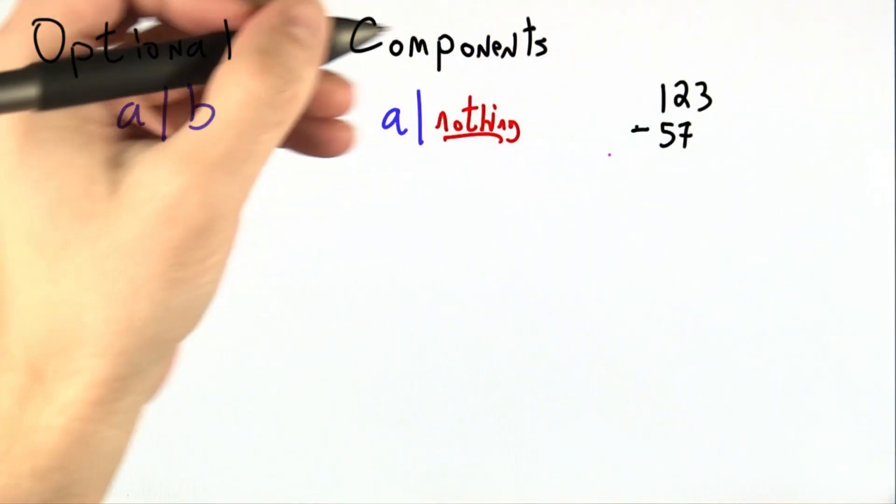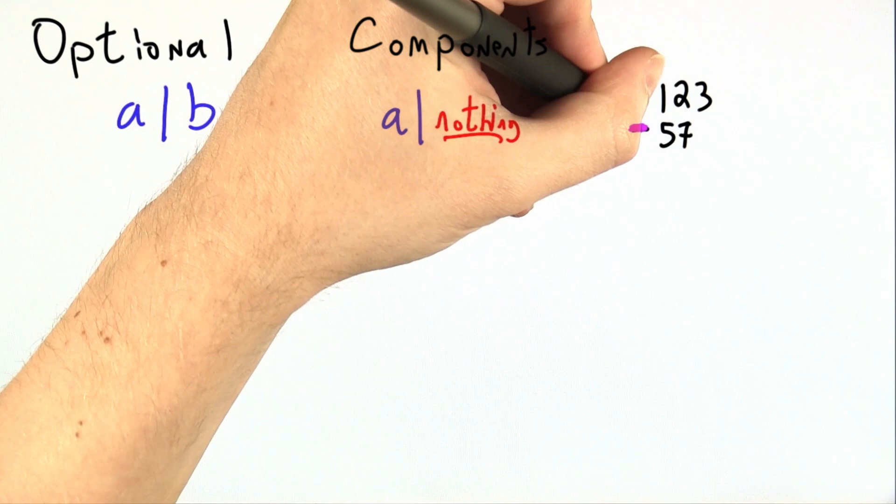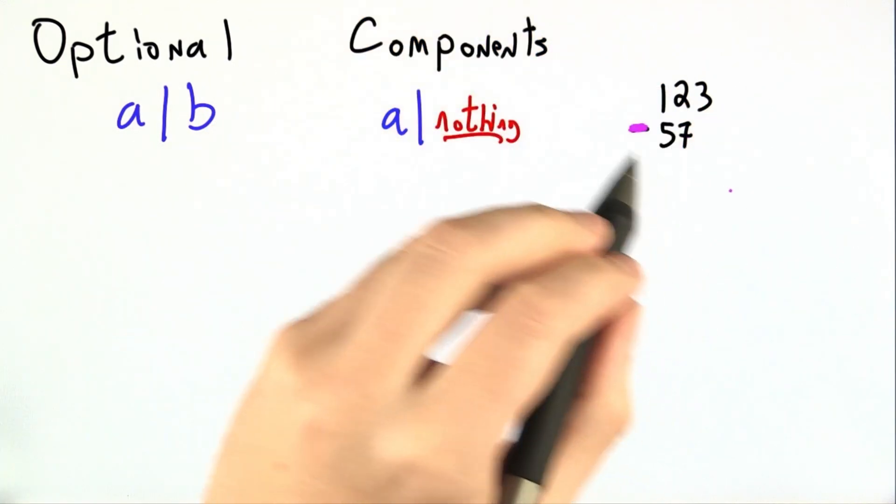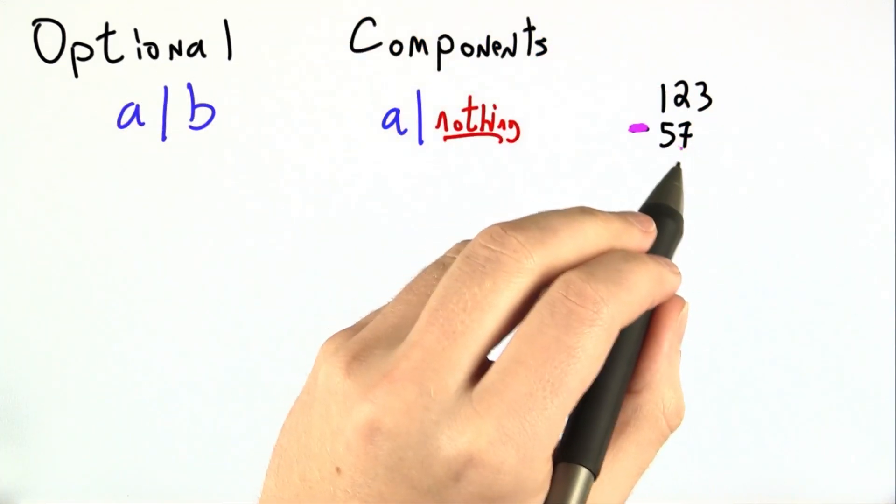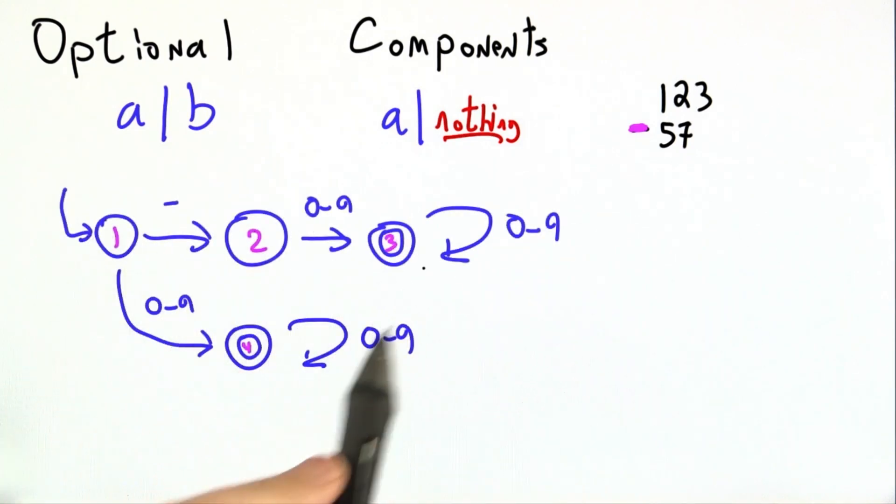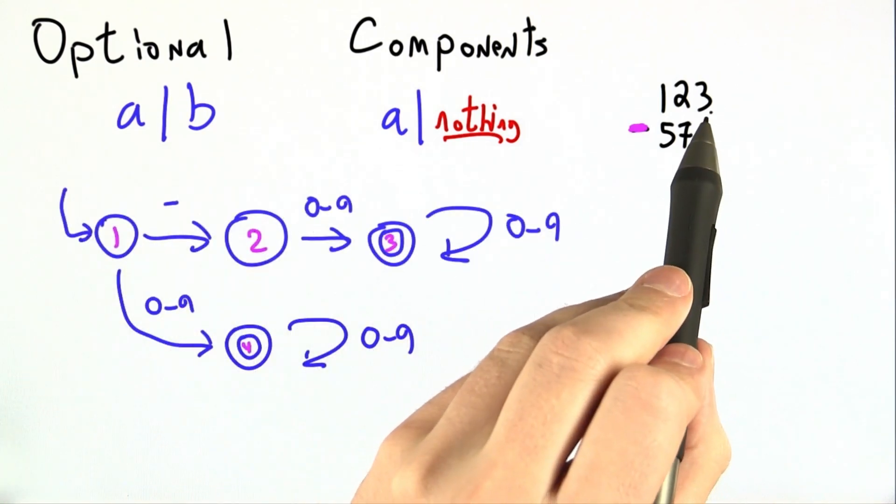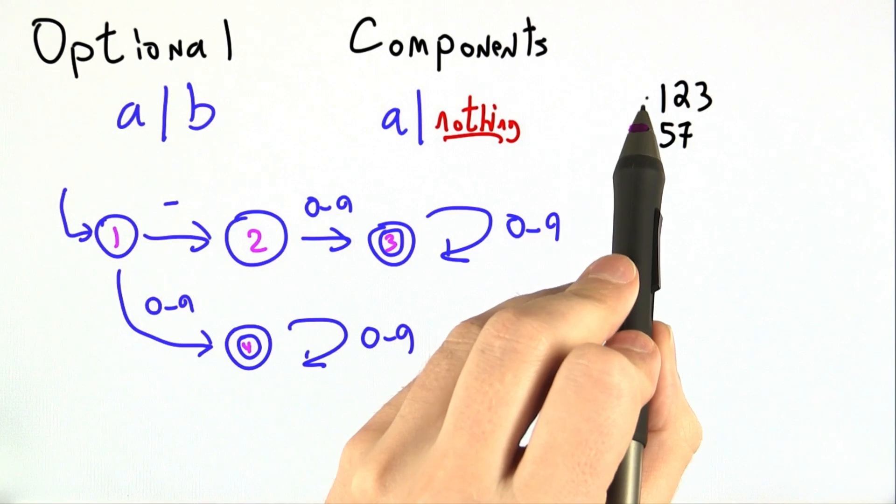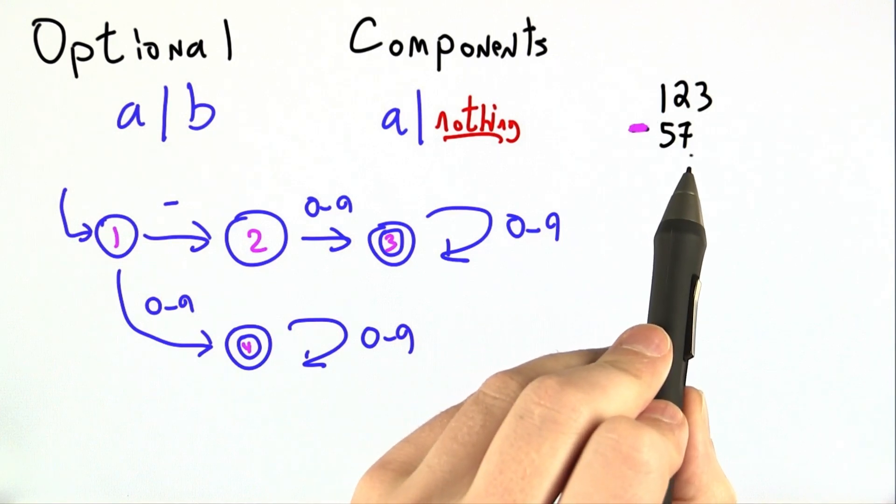For example, when you're writing out numbers, it's possible to put a negative sign at the beginning of a number, but you don't need to. It depends on which number you're trying to get across. Here I've drawn a finite state machine that accepts numbers with no leading negative sign and numbers with leading negative sign.